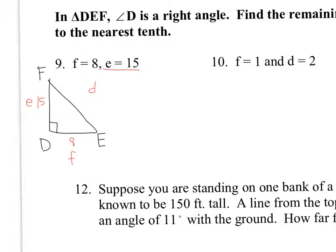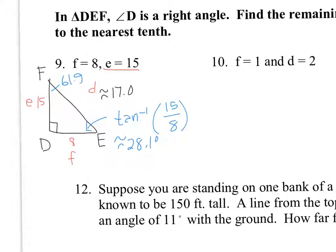To find side d, use 15 squared plus 8 squared equals d squared, giving approximately 17.0. To find angle E, use tangent inverse of 15 over 8 (opposite over adjacent), which gives approximately 28.1 degrees. Then angle F is 90 minus 28.1, which is 61.9 degrees, since the three angles must add up to 180. Use the exact known values rather than rounded ones.